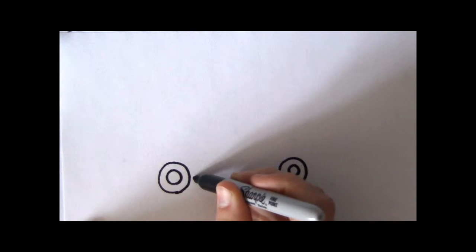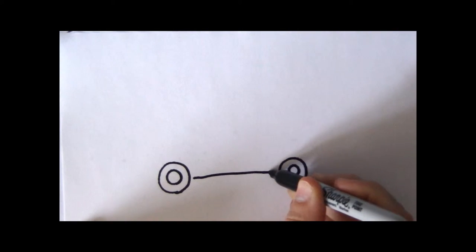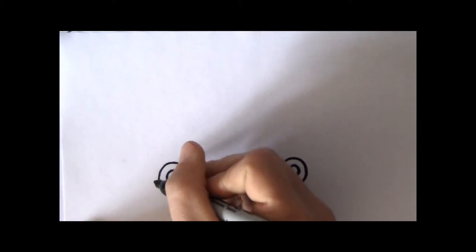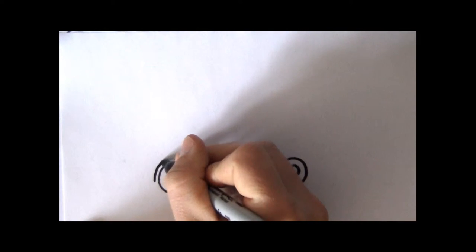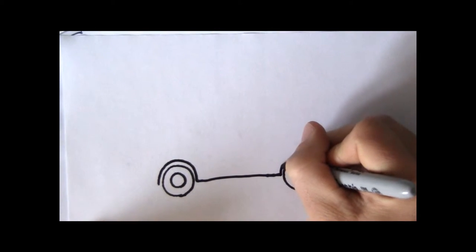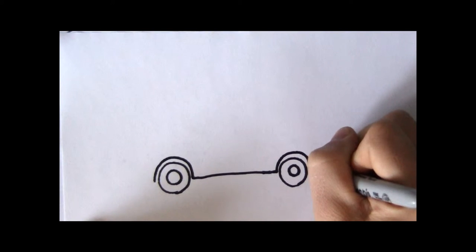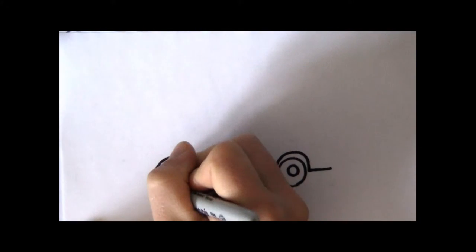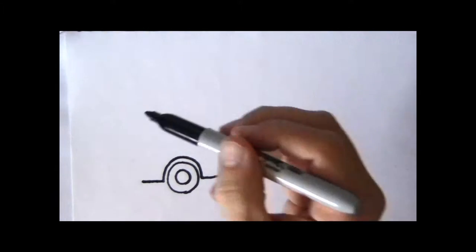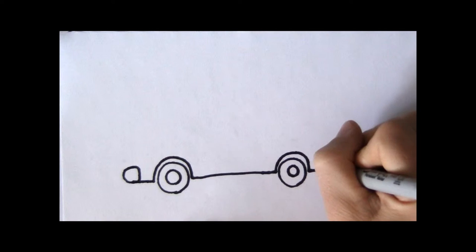Now we're going to draw a line that almost connects those two. Then a half circle that goes from the line all the way over to the other side. And we'll make a line that goes out both ways. Now we'll draw a front bumper and a back bumper.